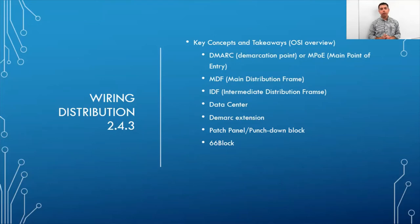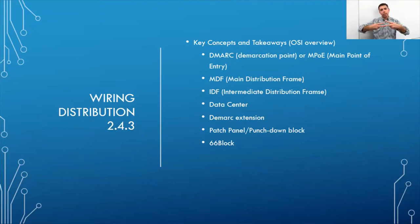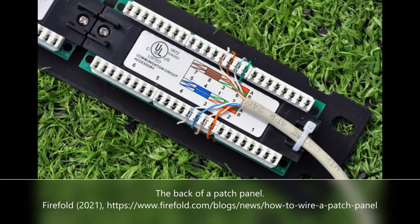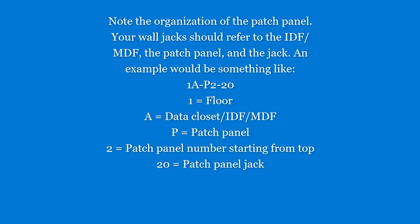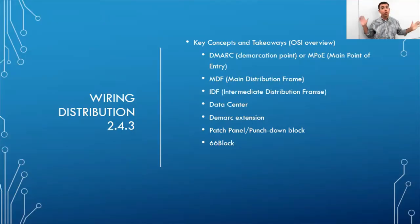Patch panels are preferable to punch-down blocks. A punch-down block connects wires on both sides to make a connection, while a patch panel is easier to label, organize, and manage. From the patch panel you run directly down into your switch.